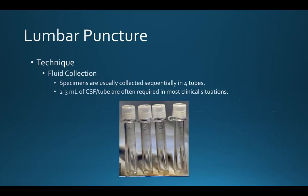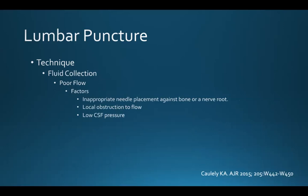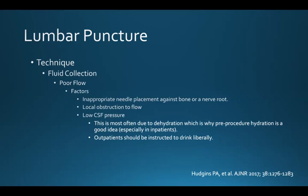Once we're done measuring pressures, we start collecting fluid. Specimens are usually collected sequentially in four tubes — look for the numbers and collect sequentially. Two to three cc's of CSF per tube are usually required. You will face patients where CSF flow is poor. This can be due to inappropriate needle placement against bone or a nerve root, local obstruction to flow, or low CSF pressure — most often due to dehydration. Pre-procedure hydration is a good idea, especially in inpatients. Outpatients should be instructed to drink liberally.